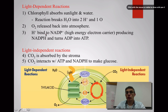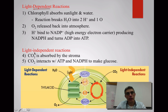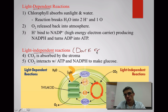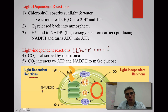Earlier in the screencast we talked about two different sets of reactions that happen in photosynthesis. One is called light-dependent reactions and the second is called light-independent reactions. If it's a light-dependent reaction, it must have light in order to proceed. If it's a light-independent reaction, no light is necessary — sometimes these are called the dark reactions. The light-dependent reactions occur within the thylakoid of the chloroplast.